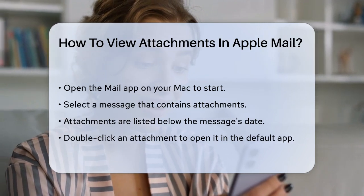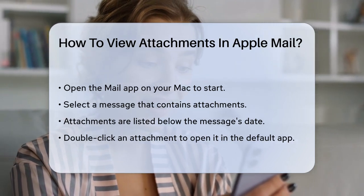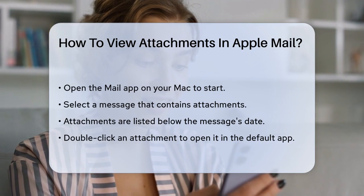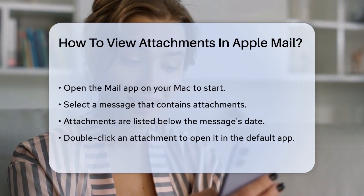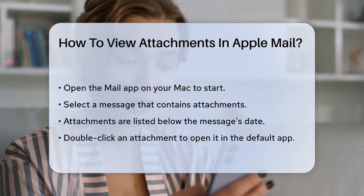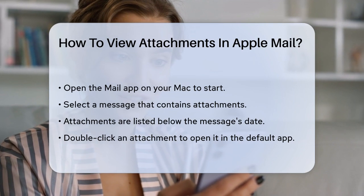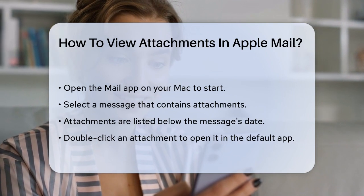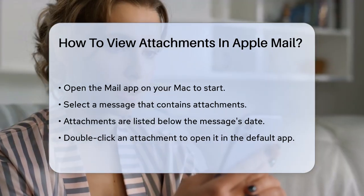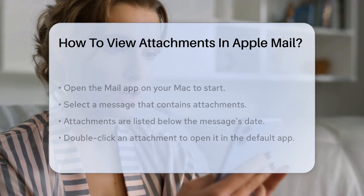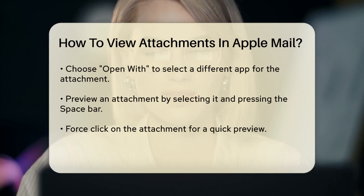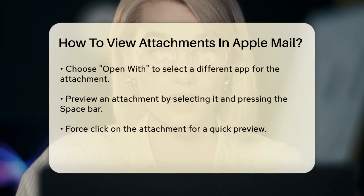You'll see the attachments listed below the date the message was sent. To open an attachment, simply double-click on it. This will open the attachment in the default app associated with that file type. For example, if it's a PDF, it will open in the Preview app.